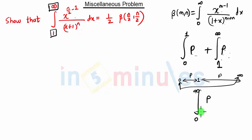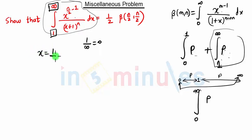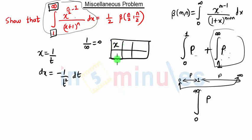We have the second term — the 1 to infinity term — already. But we also need the 0 to 1 term. To get limits from 0 to 1, we note that 1/∞ = 0. We already have 1 as the upper bound and want 0, so we use the substitution x = 1/t. Then dx = −(1/t²) dt. For the limits: when x = 1, t = 1; when x = ∞, t = 0.